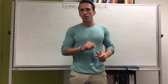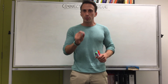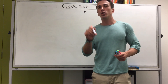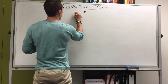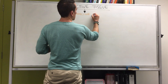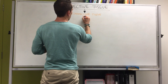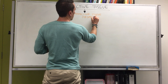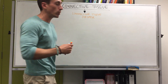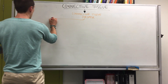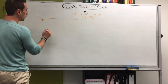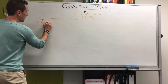This is the first video looking at the subtypes of connective tissue. The first subtype we're going to look at is connective tissue proper. Connective tissue proper is broken down into two subcategories: connective tissue proper loose and dense.